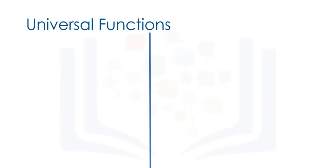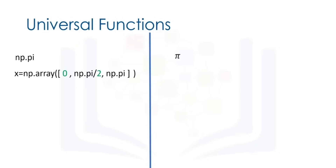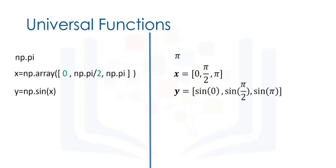We can use NumPy to create functions that map NumPy arrays to new NumPy arrays. We can access the value of pi in NumPy, and create a NumPy array in radians. We can apply the function sine to the array x and assign the values to the array y. This applies the sine function to each element in the array, corresponding to applying the sine function to each component of the vector. The result is a new array y where each value corresponds to the sine of each element in x.